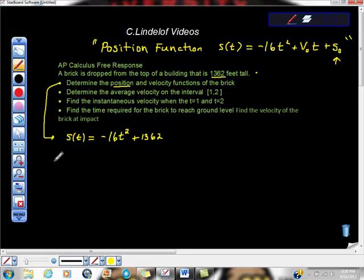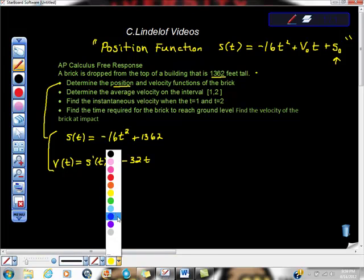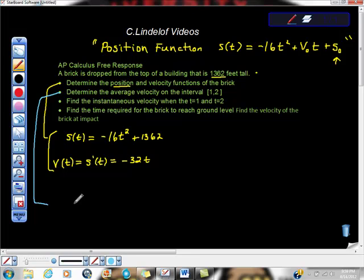Then they want velocity. Velocity, if you remember, and this is actually very good notation to use on the exam, velocity is the first derivative of position. So I'm going to use power rule here. I'm going to take this derivative and we're going to get negative 32 T plus zero. So here's the first part done.